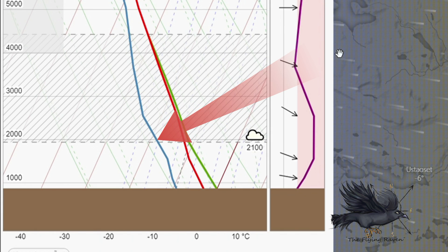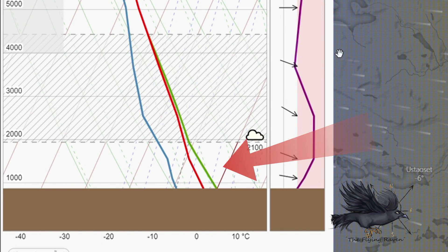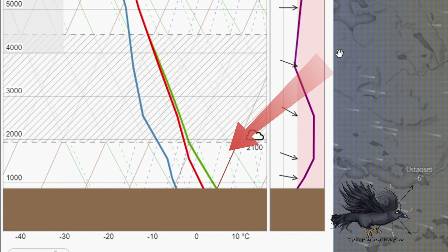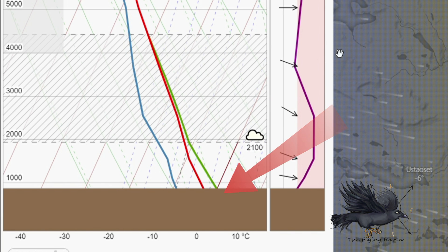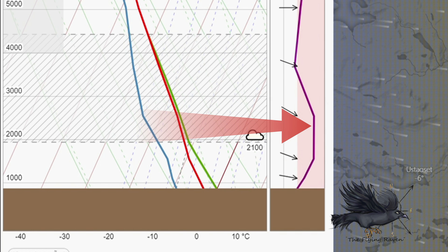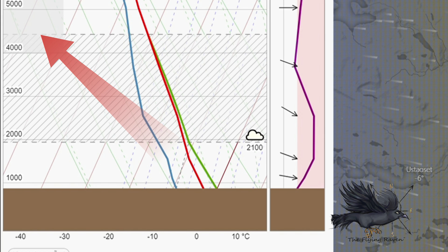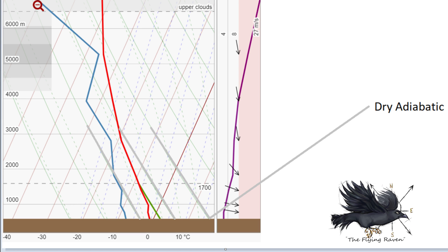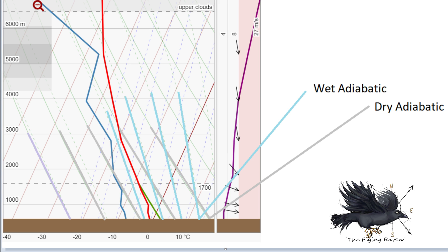The blue is dew point, the red is the temperature, the green is thermals, the brown is the mountain, the shaded is the cumulus. Purple is the wind and the gray is layer clouds. The gray lines are the dry adiabatic and the blue lines are the wet adiabatic.